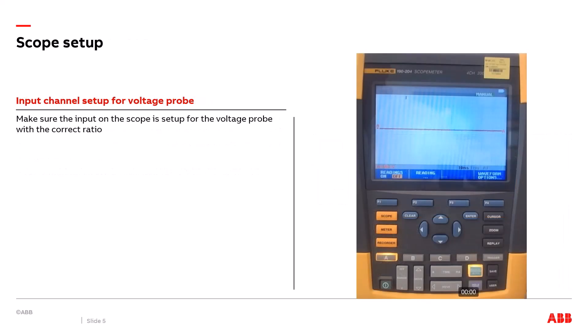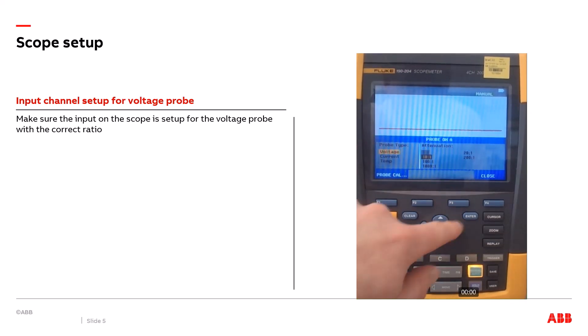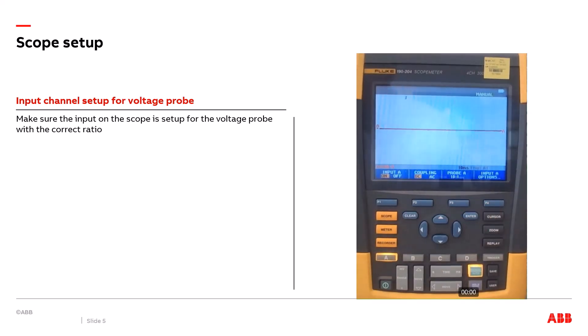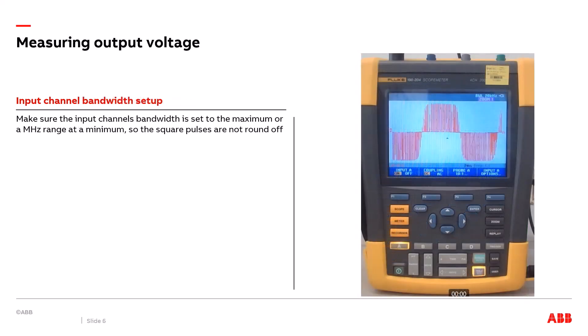Now that we have the voltage probe connected to two of the output phases of the VFD, it's time to set up the input channel on the scope for the voltage probe. You select channel A, voltage, and it's important to select the correct probe ratio. I'm using a 10-to-1 passive probe, so I select a 10-to-1 ratio. We also need to set up the bandwidth for input channel A correctly; otherwise, you could be filtering out part of the signal we're trying to measure.